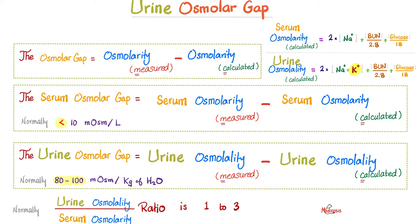What is urine osmolality? Same thing — send the urine to the lab, they dip an osmometer in it to measure all of the osmols, and give you the result in milliosmols per liter if it's osmolarity, or per kilogram if it's osmolality.